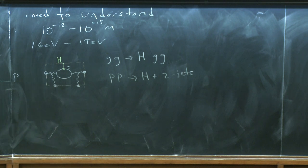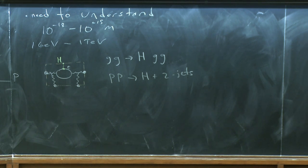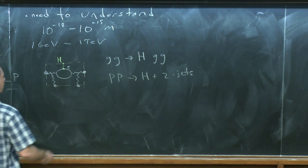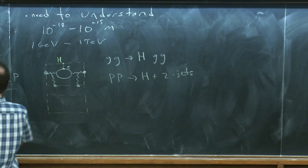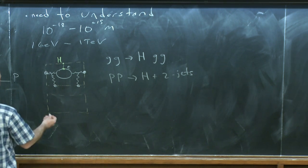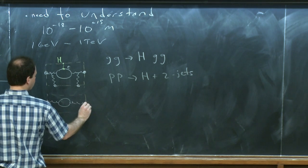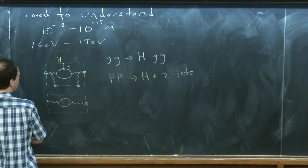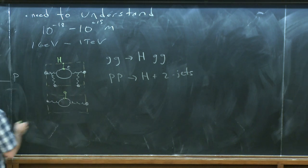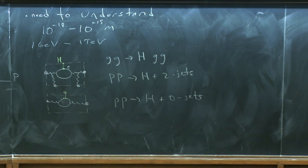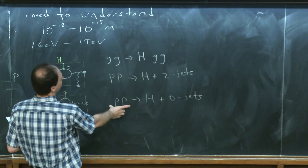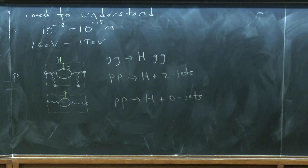This would be two-jet production together with the Higgs. You could also have gluons produce the Higgs boson without additional jets — that's PP to Higgs plus zero jets. Experimentally, the number of jets is used as a tag both to control backgrounds and to enhance signals. Separate measurements are made with different numbers of jets — zero jets, one jet, two jets — that's often how analyses are done.